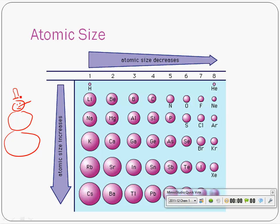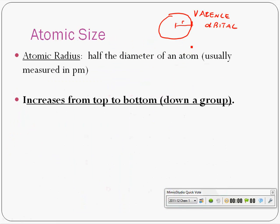Hey, guess what happens when you push the snowman over? Not a happy snowman, he just got pushed over, but he shows us that as you go across a period, atoms get smaller. Let's talk about why that happens.